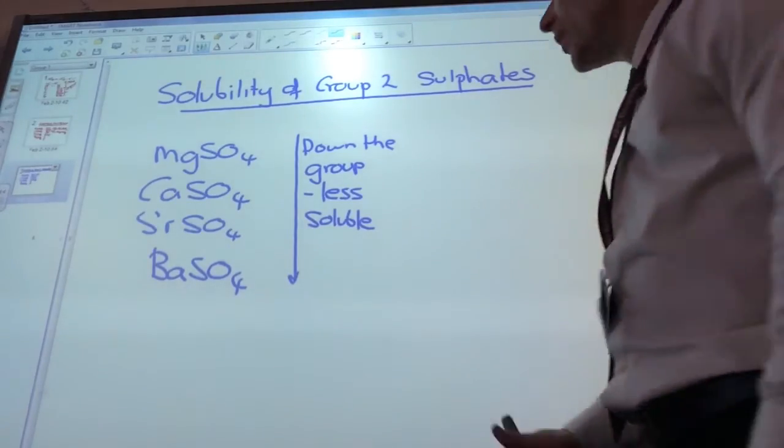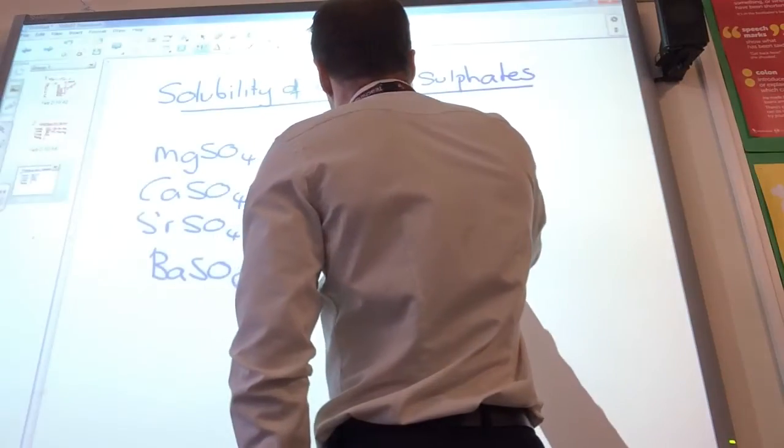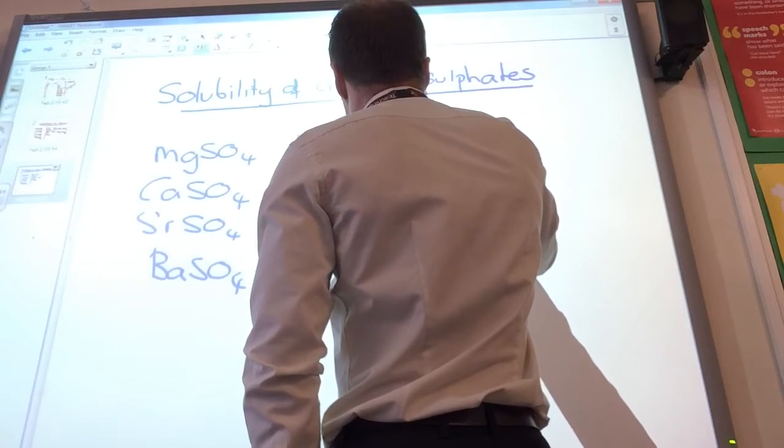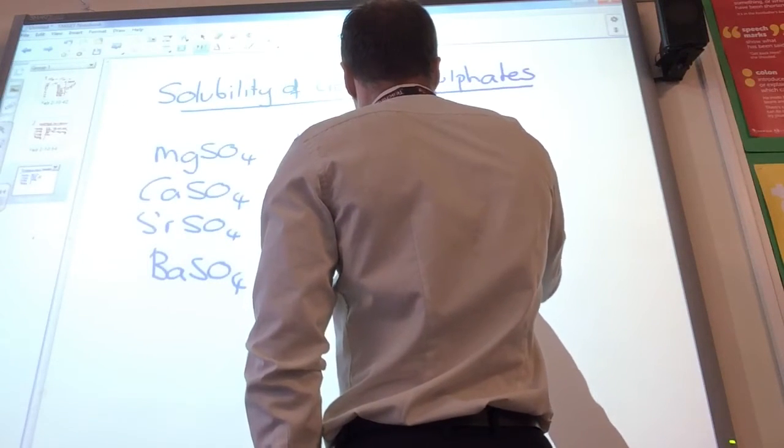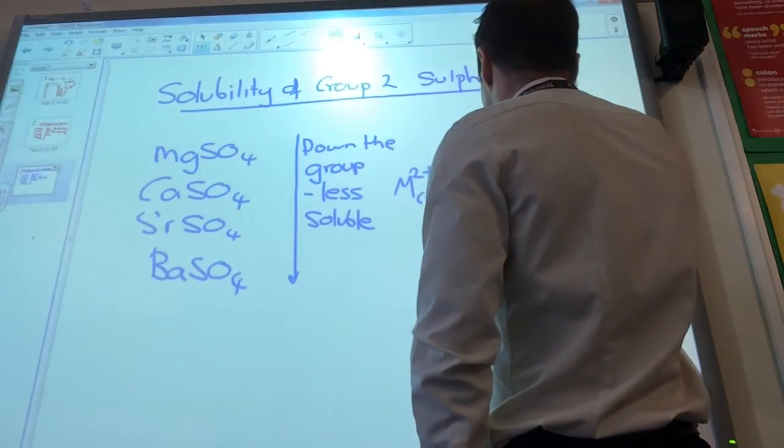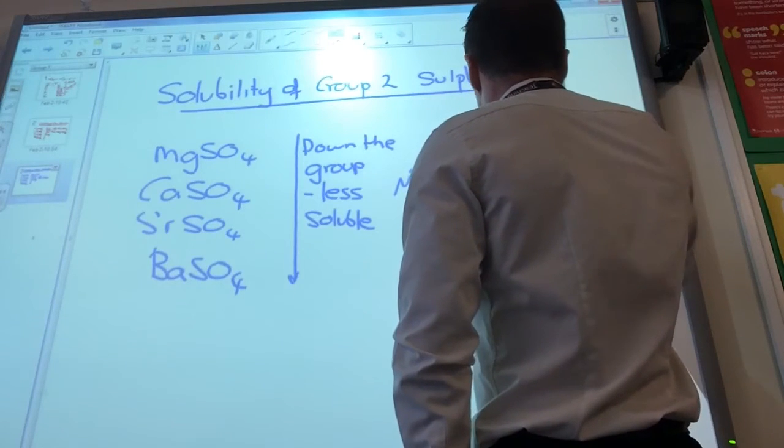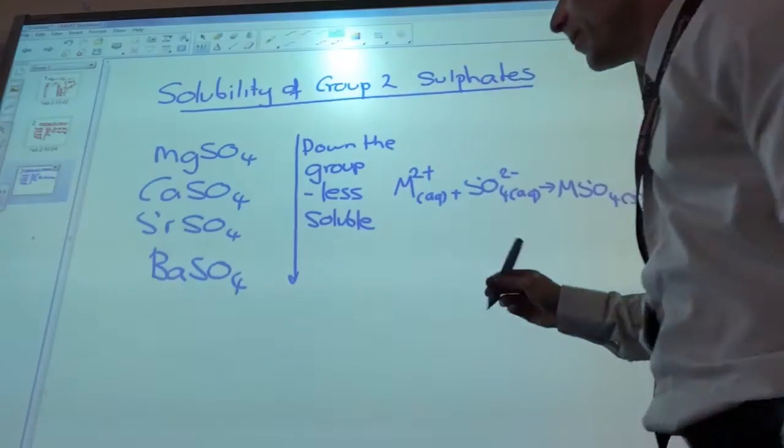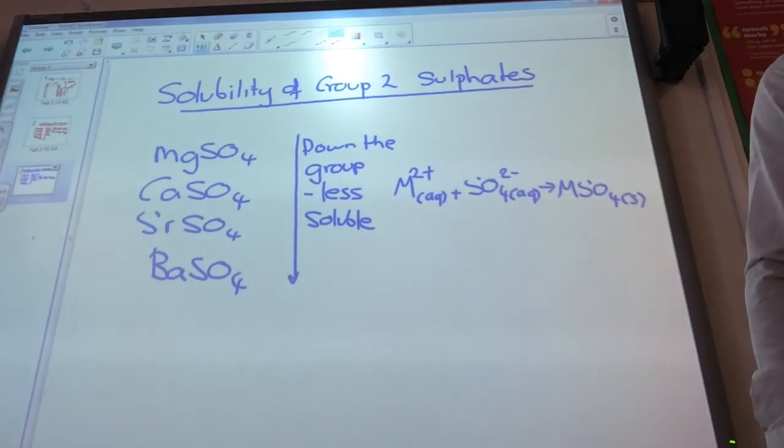So magnesium sulfate is soluble and then they get to sparingly soluble for calcium and then strontium and barium are both insoluble. So again we can write the general, if I just do the general ionic equation, obviously group 2 are going to be M2+ aqueous plus my sulfate ion SO4 2- aqueous is going to give me M SO4 solid.